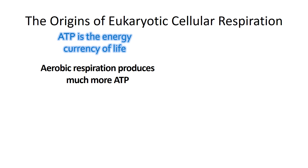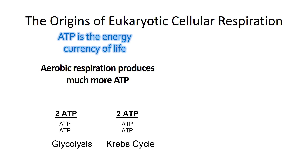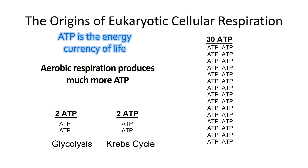ATP is the energy currency of life. Aerobic respiration, or cellular respiration, makes much more ATP. So when you have oxygen present, if you've got one molecule of glucose, you're going to make much more than just two ATPs. These are the steps of cellular respiration — glycolysis and the Krebs cycle — and from a molecule of glucose you get about four ATPs total. However, the final step of cellular respiration uses oxygen, and it produces between 28 and 32 ATPs. So this is what you get with oxygen versus the four without — and that's enormous.